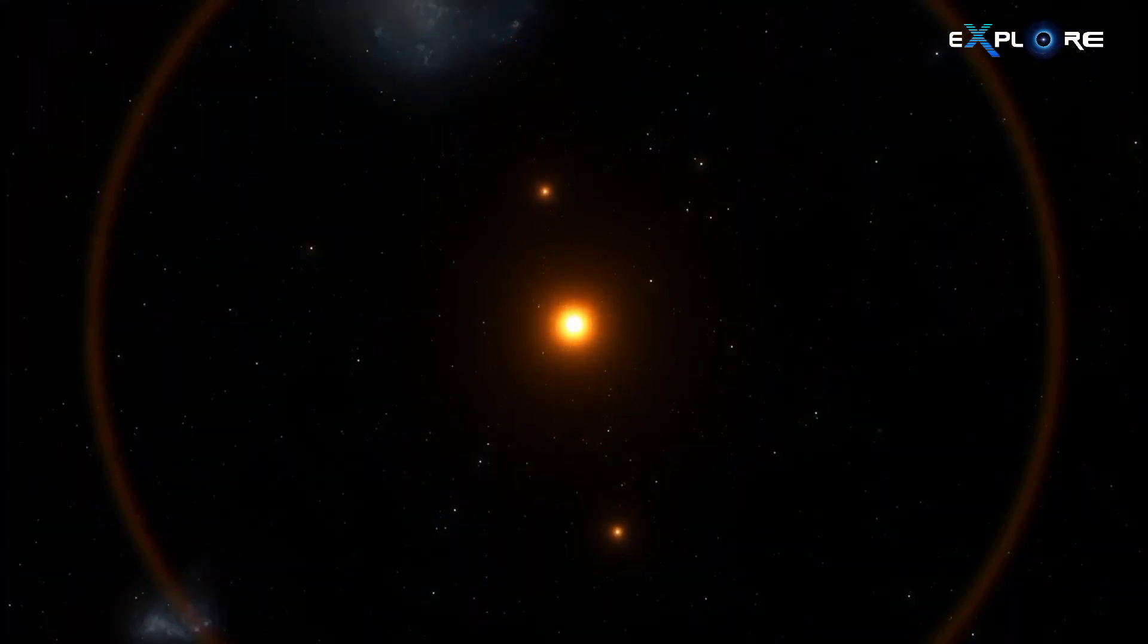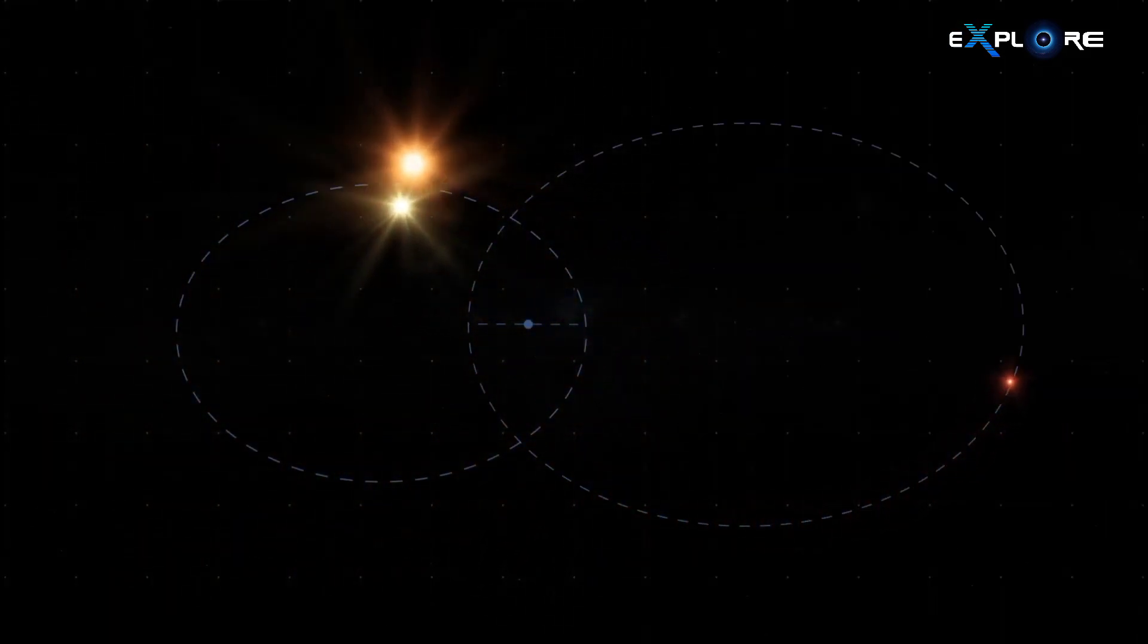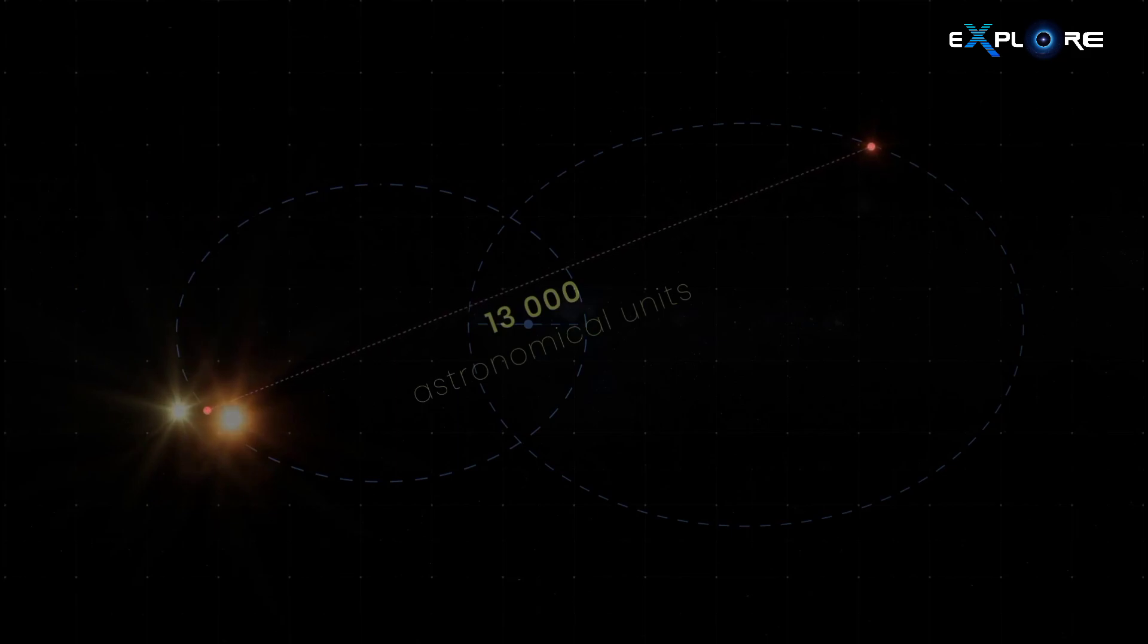While part of this stellar system follows an eccentric orbit, at present, it remains about 13,000 astronomical units away from the binary pair of Alpha Centauri A and B.